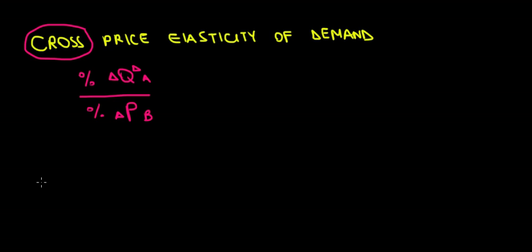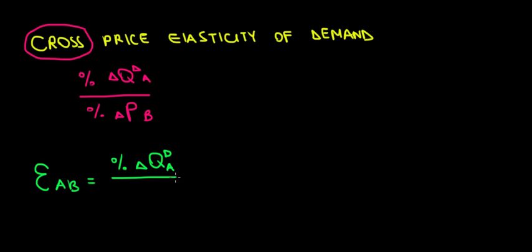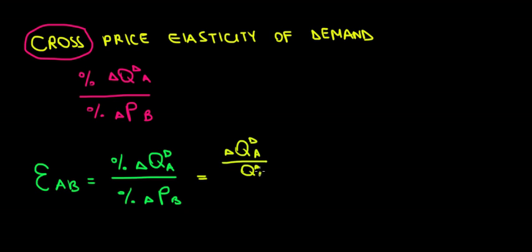Let's write it a bit more formally. We'll call this the elasticity of A and B, meaning we're going to speak about the percentage change in quantity demanded of good A relative to the percentage change in price of good B. That's the change in quantity demanded of good A relative to the initial quantity demanded of good A, divided by the change in price of good B relative to the initial price of good B.